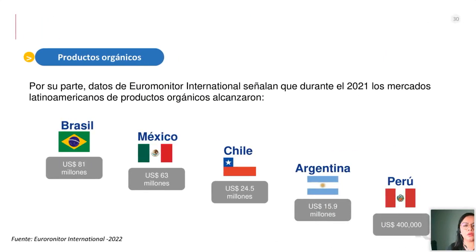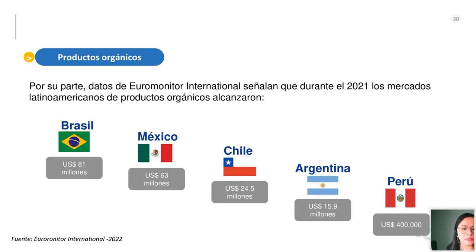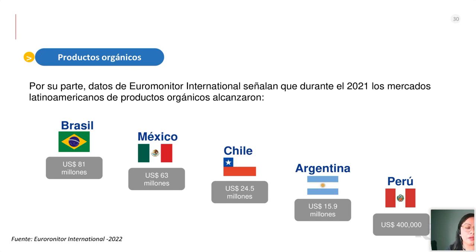Dentro de los productos orgánicos, se tiene el registro del 2021 en relación a la CAM, que son nichos atractivos que podríamos ir evaluando. Brasil lidera las ventas de productos orgánicos con 81 millones de dólares, seguido de México con 63 millones, Chile con 24.5 millones, Argentina con 15.9 millones, y nosotros a nivel nacional con 400 mil dólares.